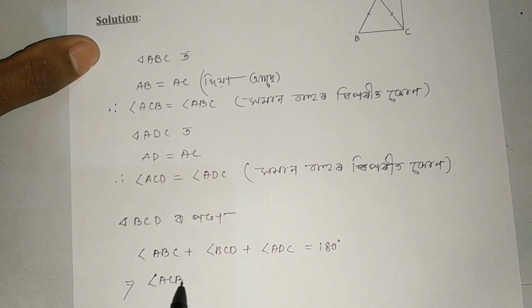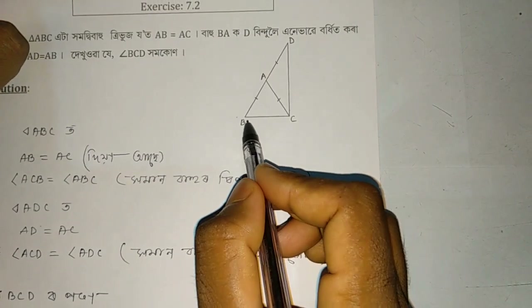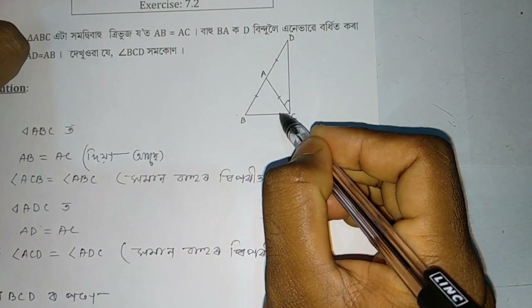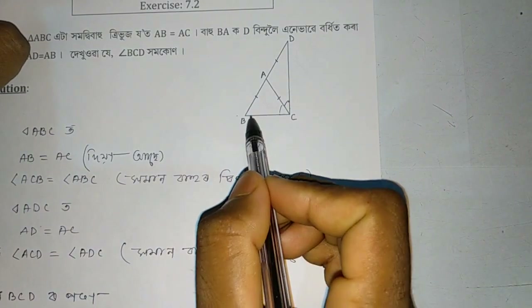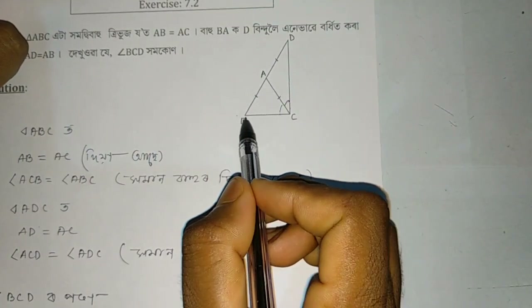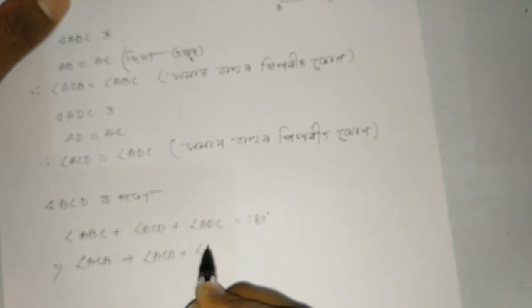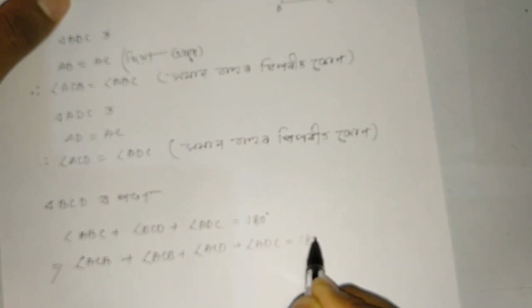I will write angle ACB plus angle BCD. I will write angle ACB plus angle ACD. I will write the angle ACB plus angle ACD, plus angle ADC, equal to 180 degrees.